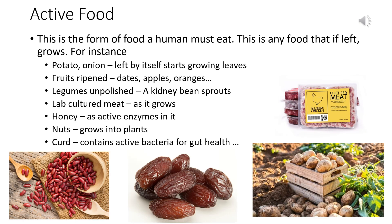So what can be examples of active food? This is the form of food that a human must eat — any food that, if left, grows. For instance, onion and potato left by themselves start growing leaves. If you talk of tomato, it may seem to decay from outside, but if you plant those seeds, you will see seedlings coming from there. Fruits that are ripened — and understand that ripening is very important, fully ripened properly. Dates, apples, oranges, mangoes — you can just name it.